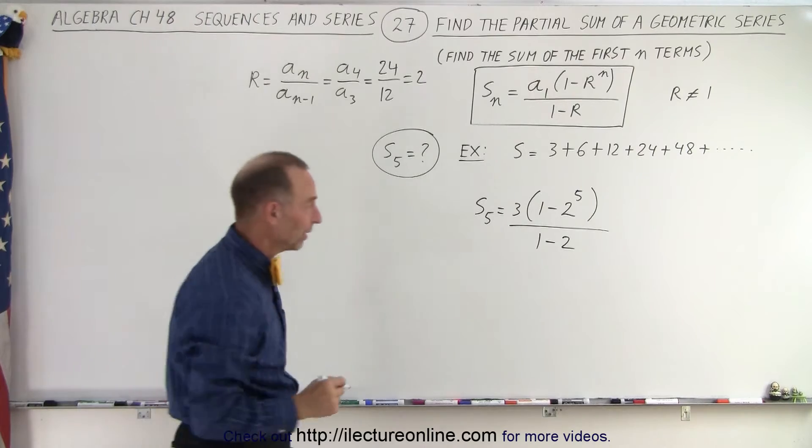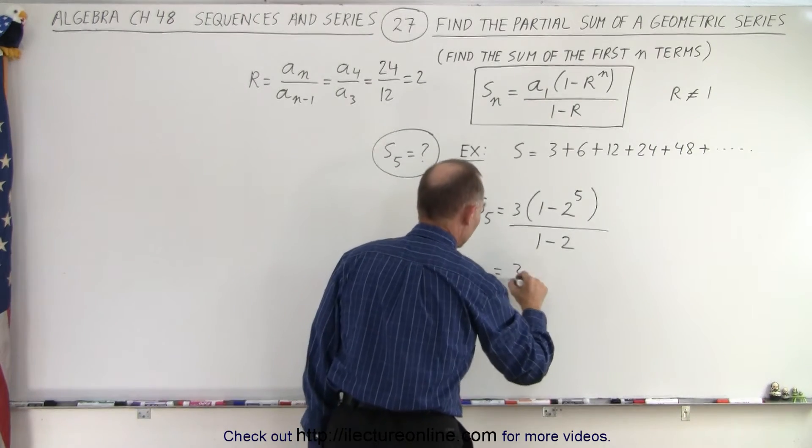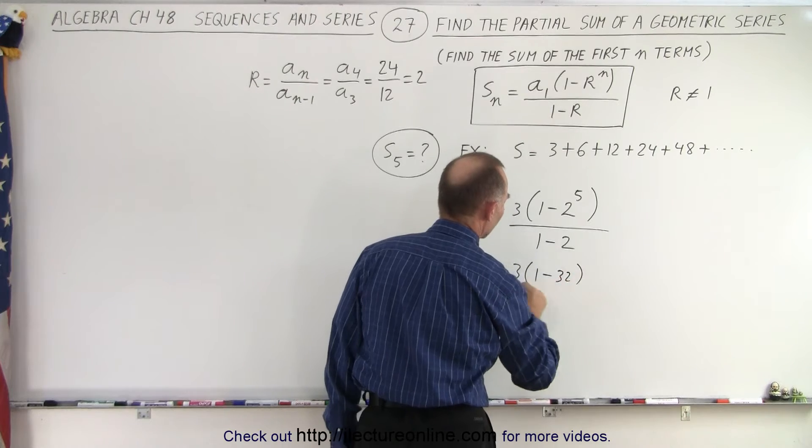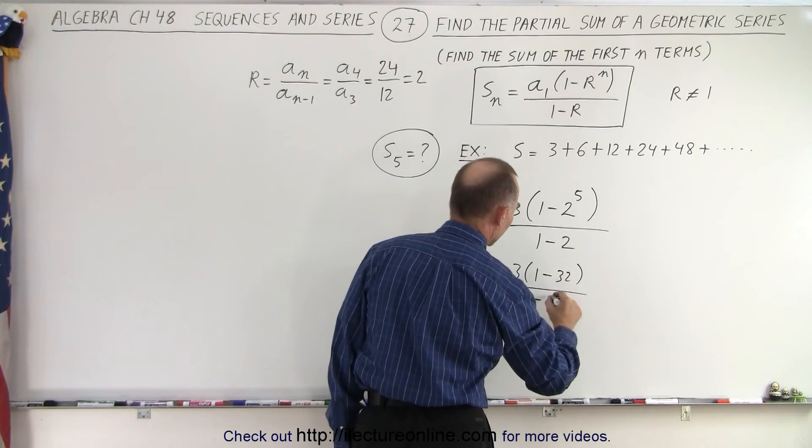Let's figure out what that equals. This is 3 times (1 - 32) divided by -1.